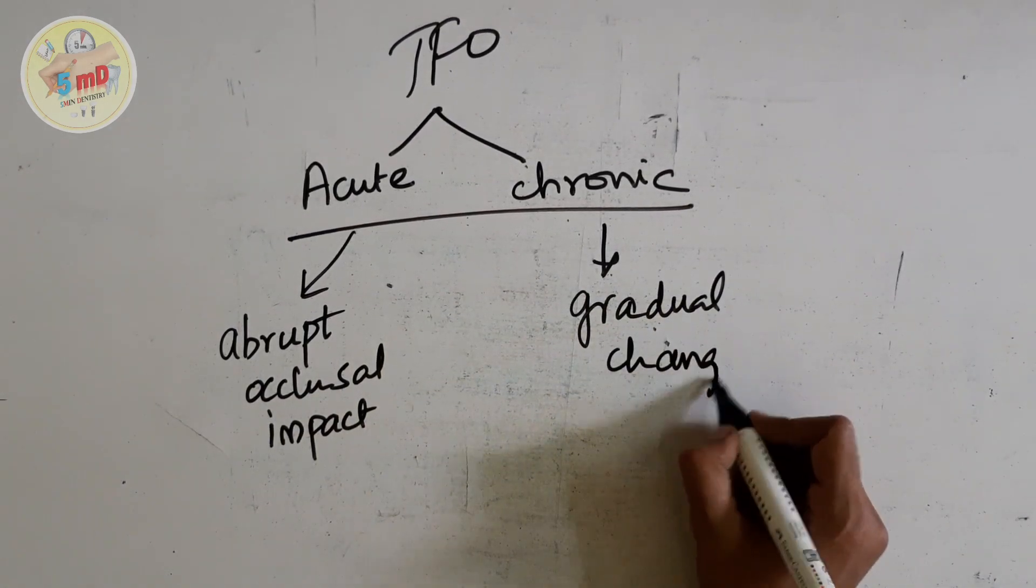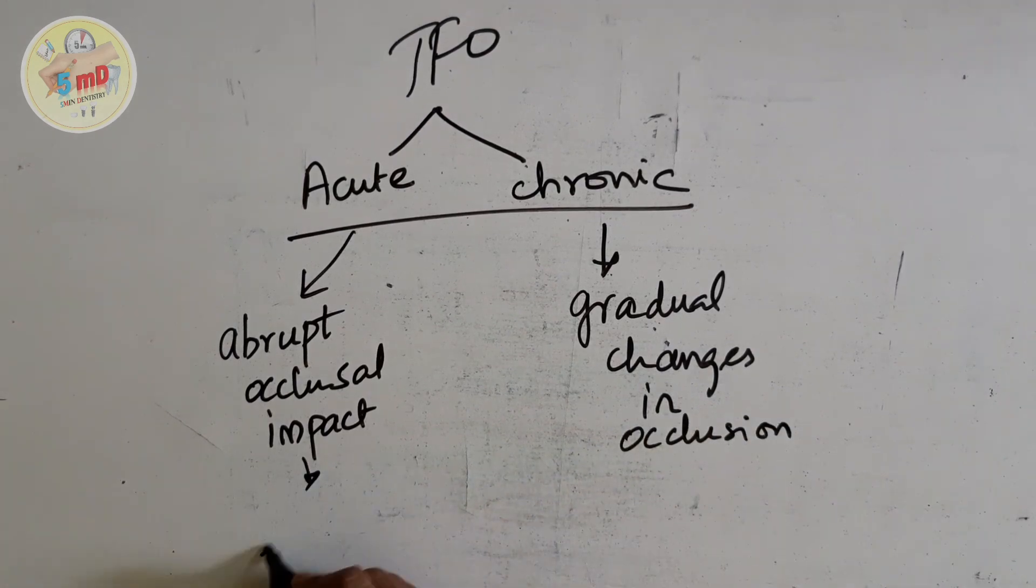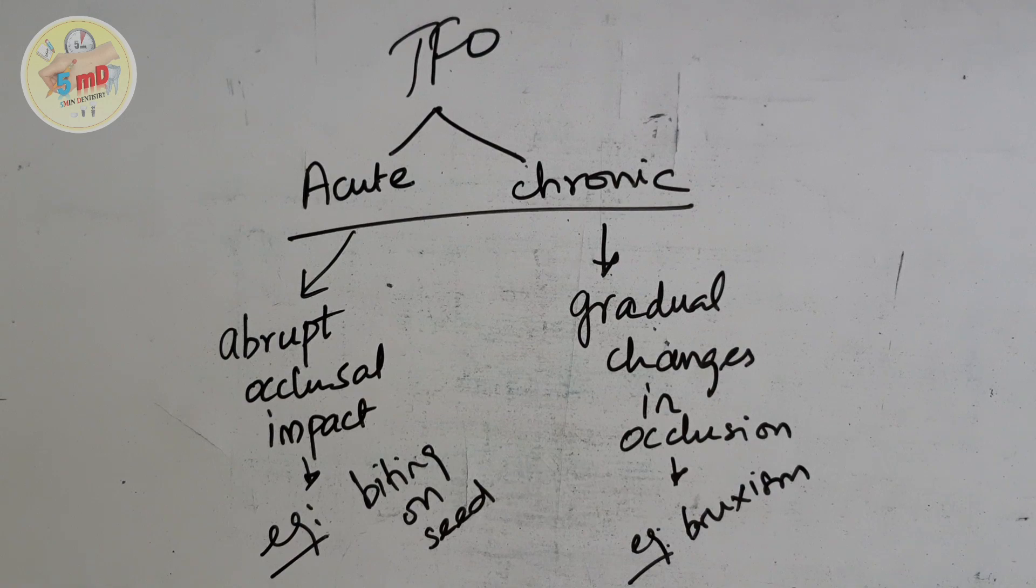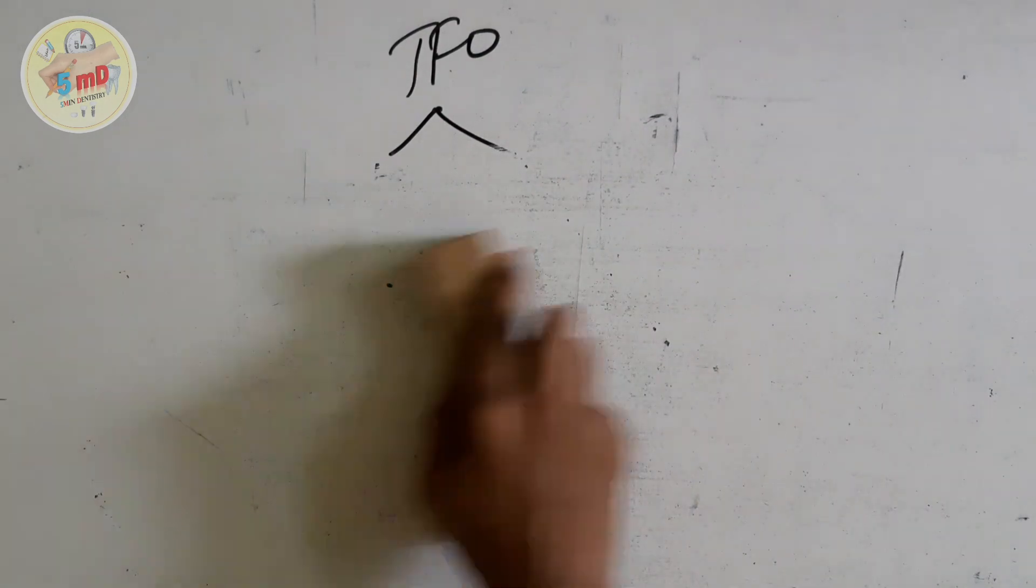In chronic, we have gradual changes in occlusion. It is more commonly seen in clinical setup than acute, for example bruxism-like changes.